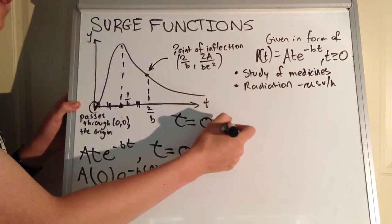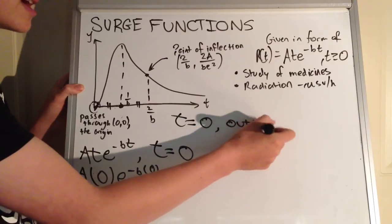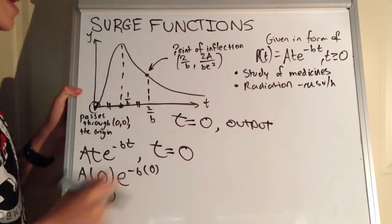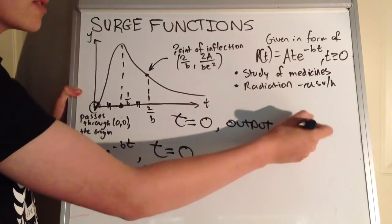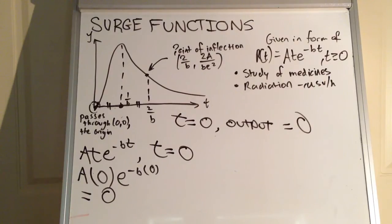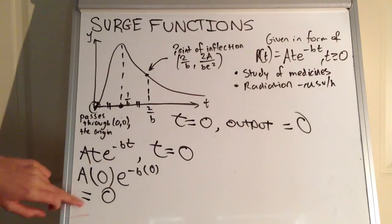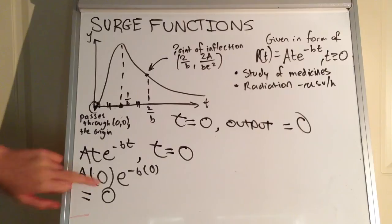So at t equals zero, there's always going to be an output of zero — whether that's microsieverts per hour in the case of radiation, or parts per million in the case of medicines. This makes sense in context: you obviously won't have any radiation before there is a nuclear problem, and you won't have any chemicals in your bloodstream without first having medicine. So when we substitute in t equals zero, we always get zero as the output because when you multiply anything by zero you get zero.